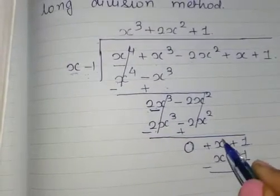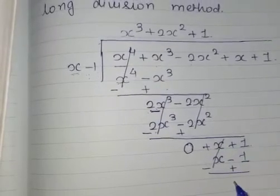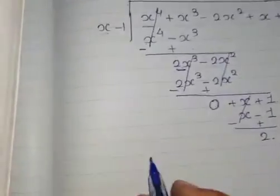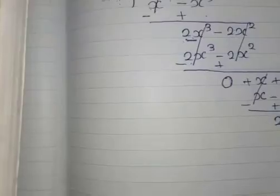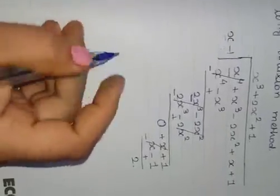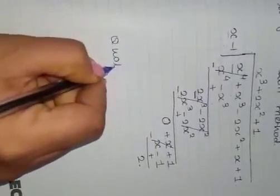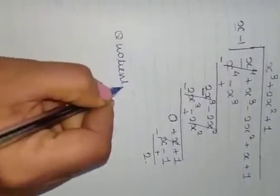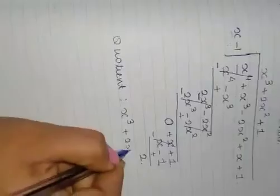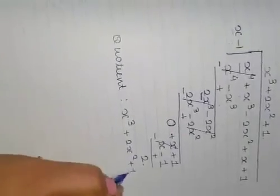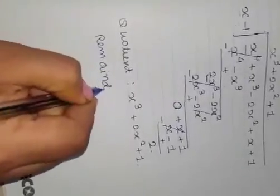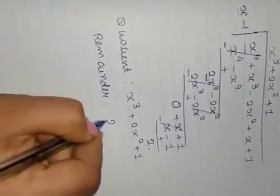Sign change. X minus X, 0. 1 plus 1, 2. Always write the quotient and reminder at the end. So our quotient in this case will be X cube plus 2X square plus 1, and the reminder will be 2. And done.